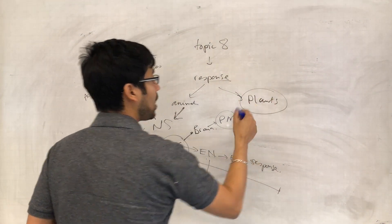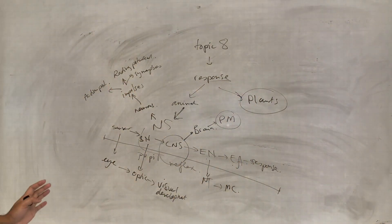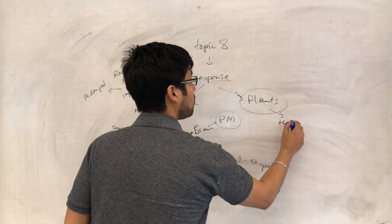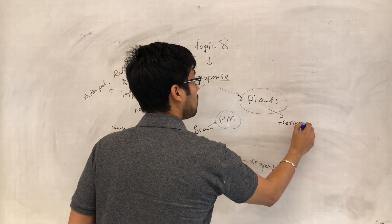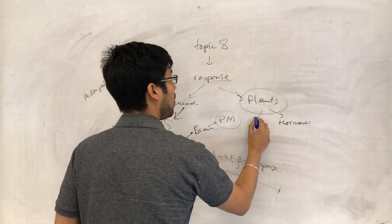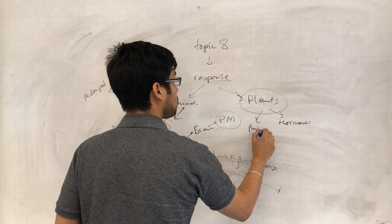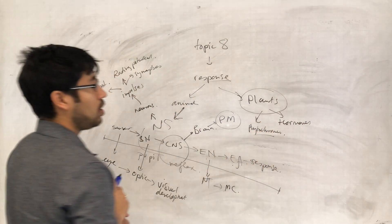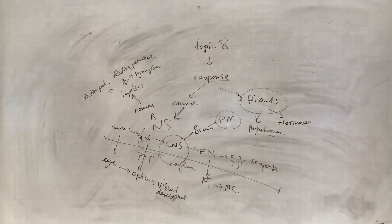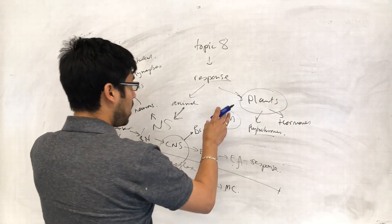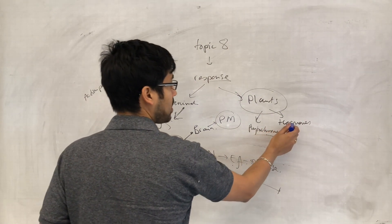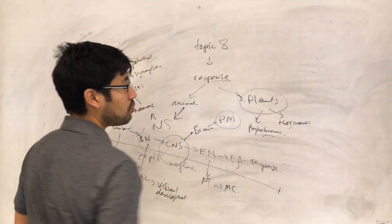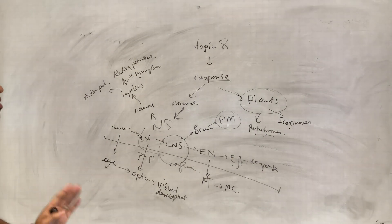The last thing we haven't looked at yet is the idea that plants can also make responses, but they don't have a nervous system — they do it via hormones and via phytochromes. Plants can make responses; they are more basic, but they can respond nonetheless, and that's what we'll cover next to finish this off.